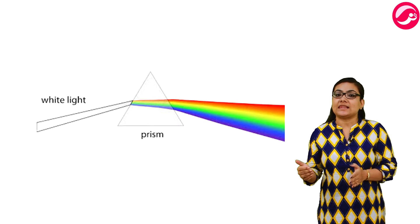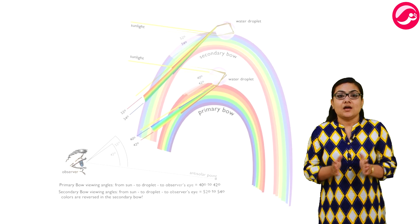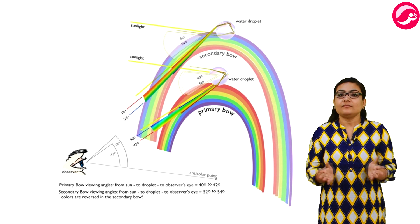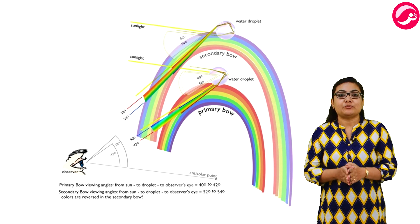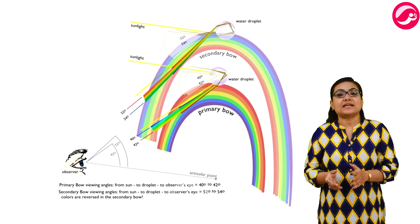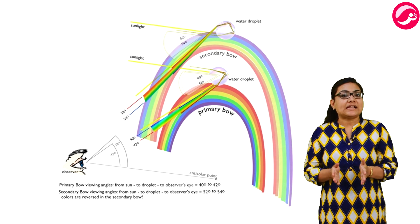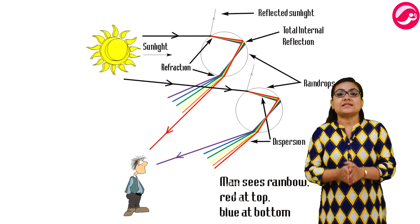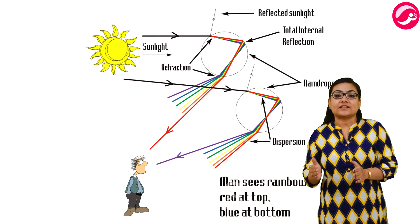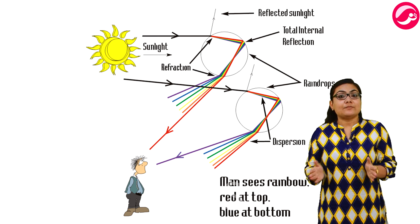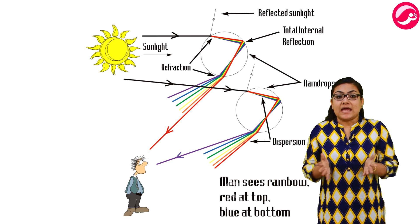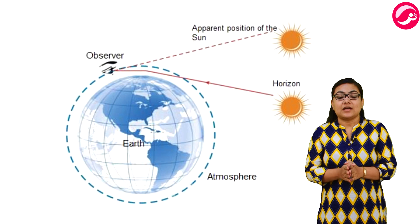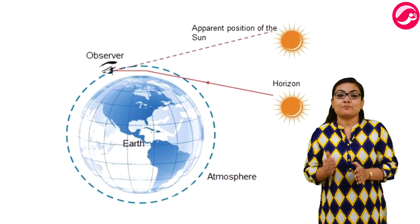Any light that gives a spectrum similar to that of sunlight is often referred to as white light. A rainbow is a natural spectrum appearing in the sky after a rain shower. Raindrops work like a prism — when white light enters a raindrop, it experiences refraction and total internal reflection inside the raindrop. The emergent light experiences dispersion, and as a result a rainbow is formed against the backdrop of the sky.